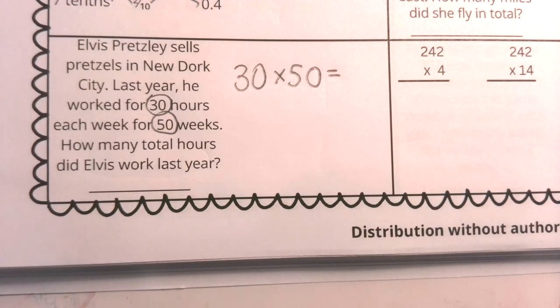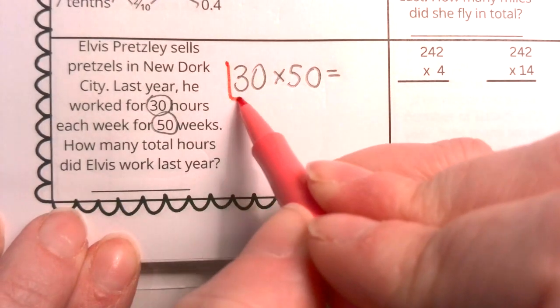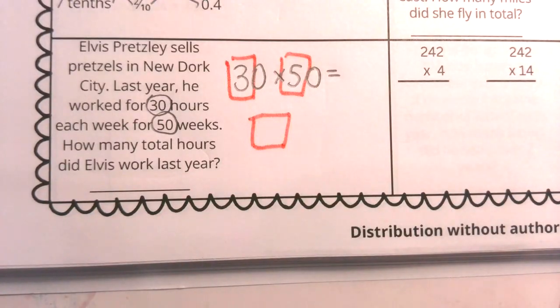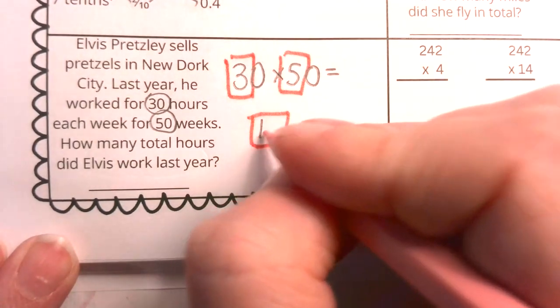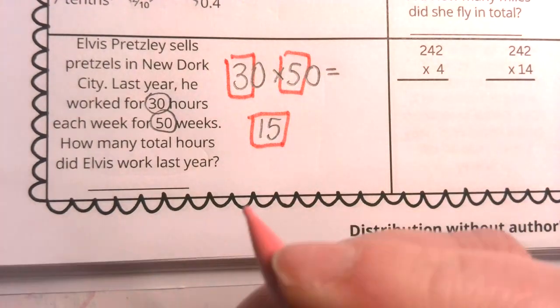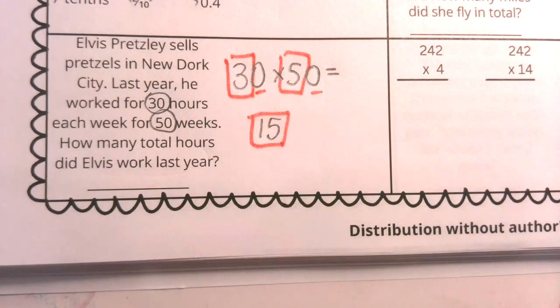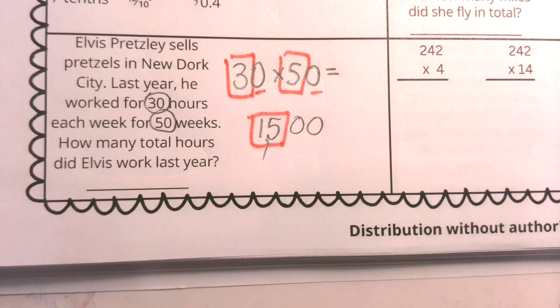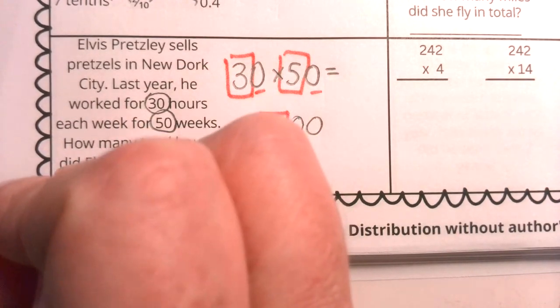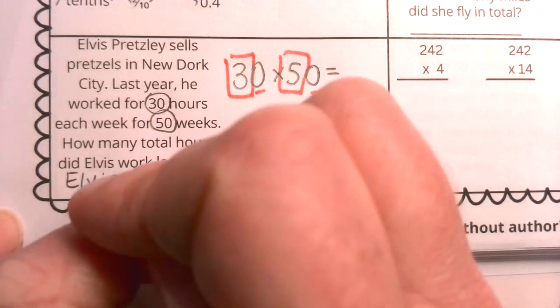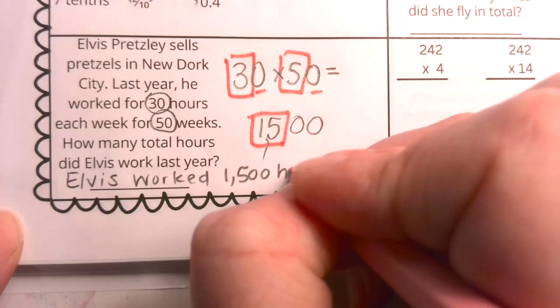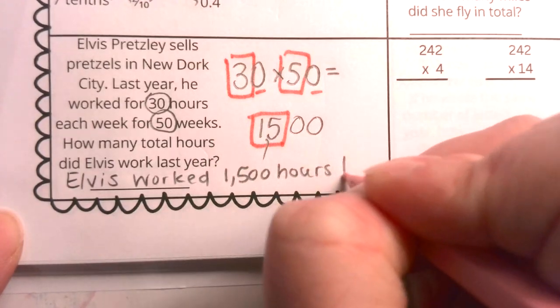Now, this is a great question to remember some basic fact with zero tricks for multiplication. And that's exactly what I'm going to do here with you. Three times five is 15. And then I ask myself, how many zeros exist outside that basic fact? Well, there are two. And that gives me my answer 1,500. So yes, we're going to write Elvis worked 1,500 hours last year.